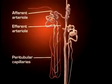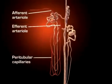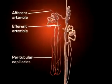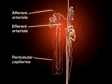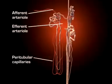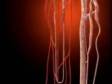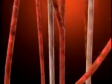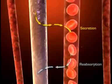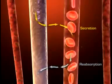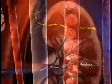Blood flows from the glomerulus via the efferent arterioles into the peritubular capillary network, a low-pressure reabsorptive system surrounding all portions of the tubules. This arrangement permits rapid movement of solutes and water between the fluid in the tubular lumen and the blood in the capillaries.